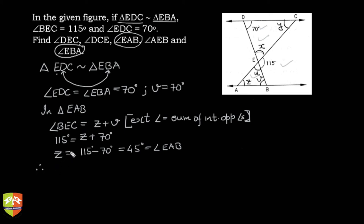Now since triangle EDC is similar to triangle EBA, therefore we can say angle ECD is equal to angle EAB, which is equal to Z, and that we found out is equal to 45 degrees.